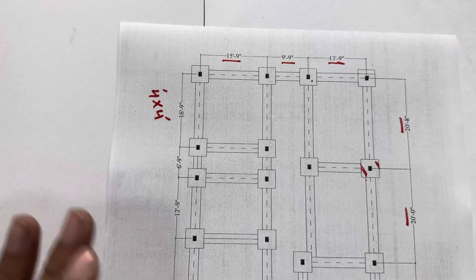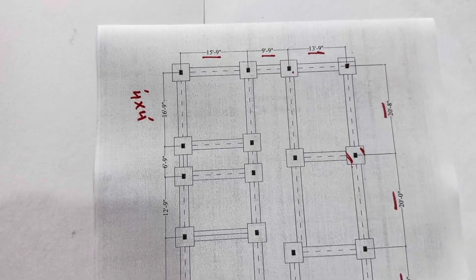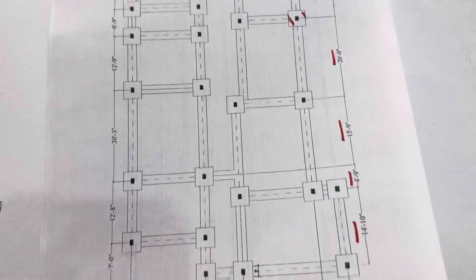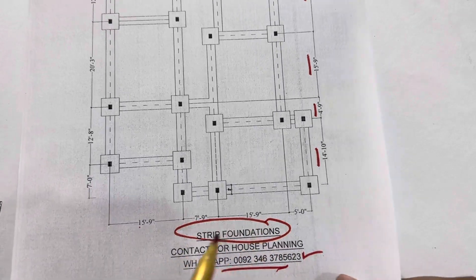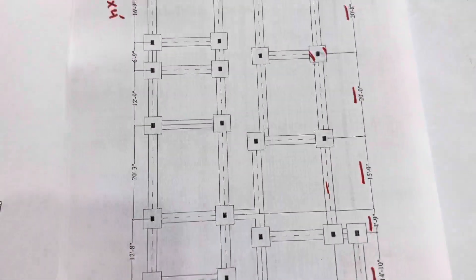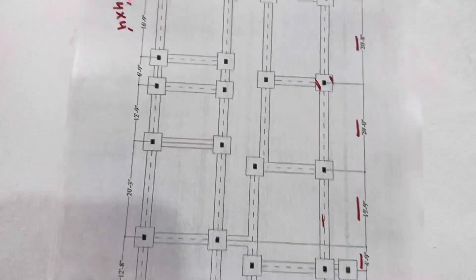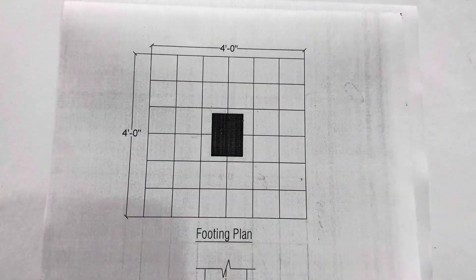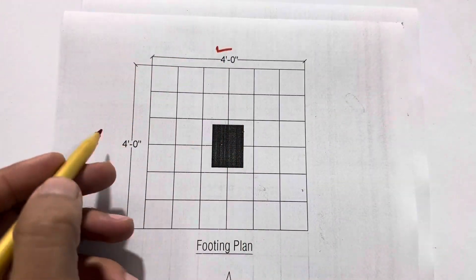Now, what is the depth of the footing and inside steel reinforcement? So I will guide you. If you see, this is footing, but the footing is not individual footing. This is strip footing which are connected by a beam. You can see clearly.